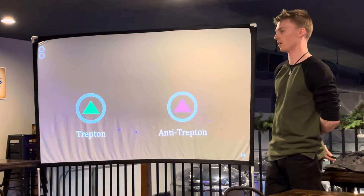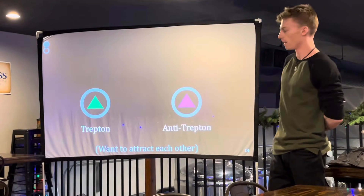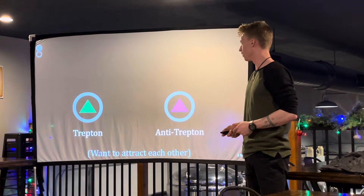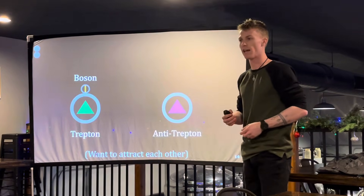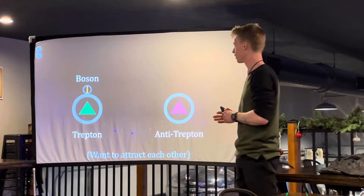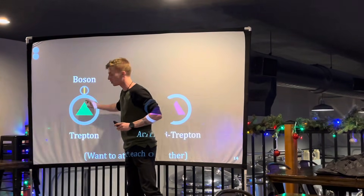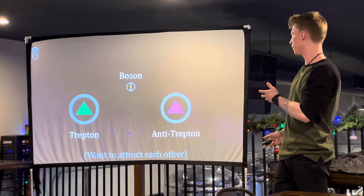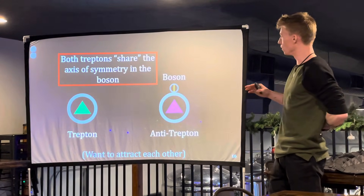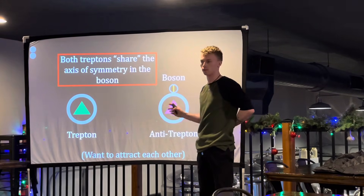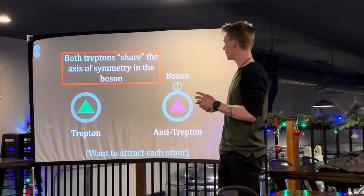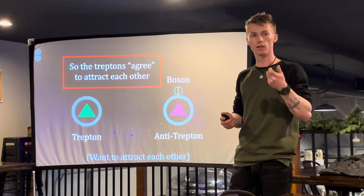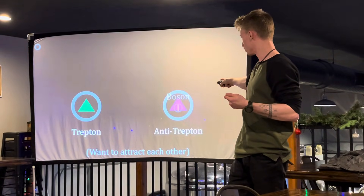Let's assume we have a trepton and an antitrepton. They will want to attract each other, but they need to communicate to know the other exists. The trepton will emit one boson — represented with a line, which is the axis of symmetry. That boson travels to the antitrepton and touches down. They realize they share the same axis of symmetry, and because of that they agree to attract each other. Then the boson is absorbed, and they actually move toward each other.